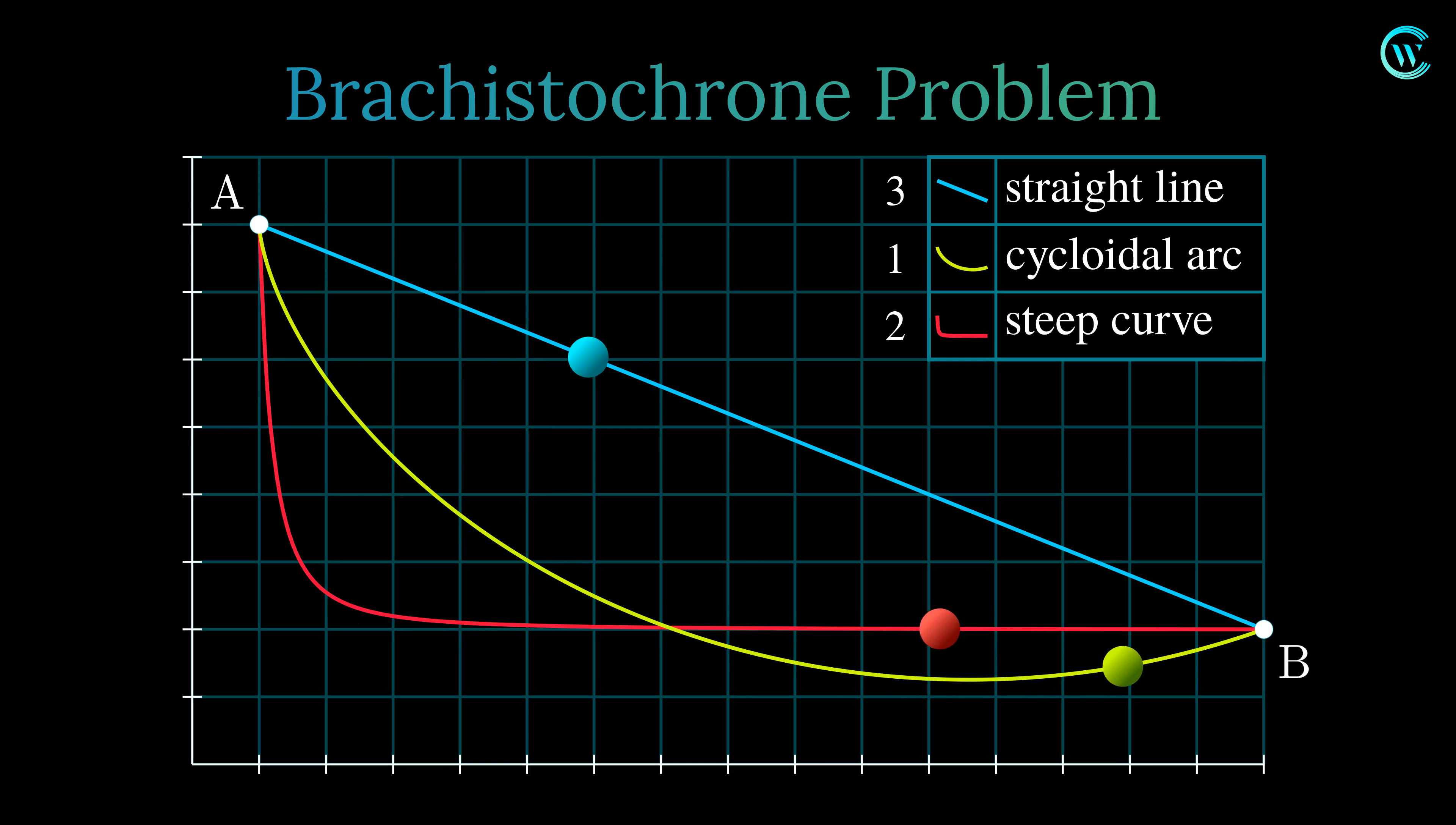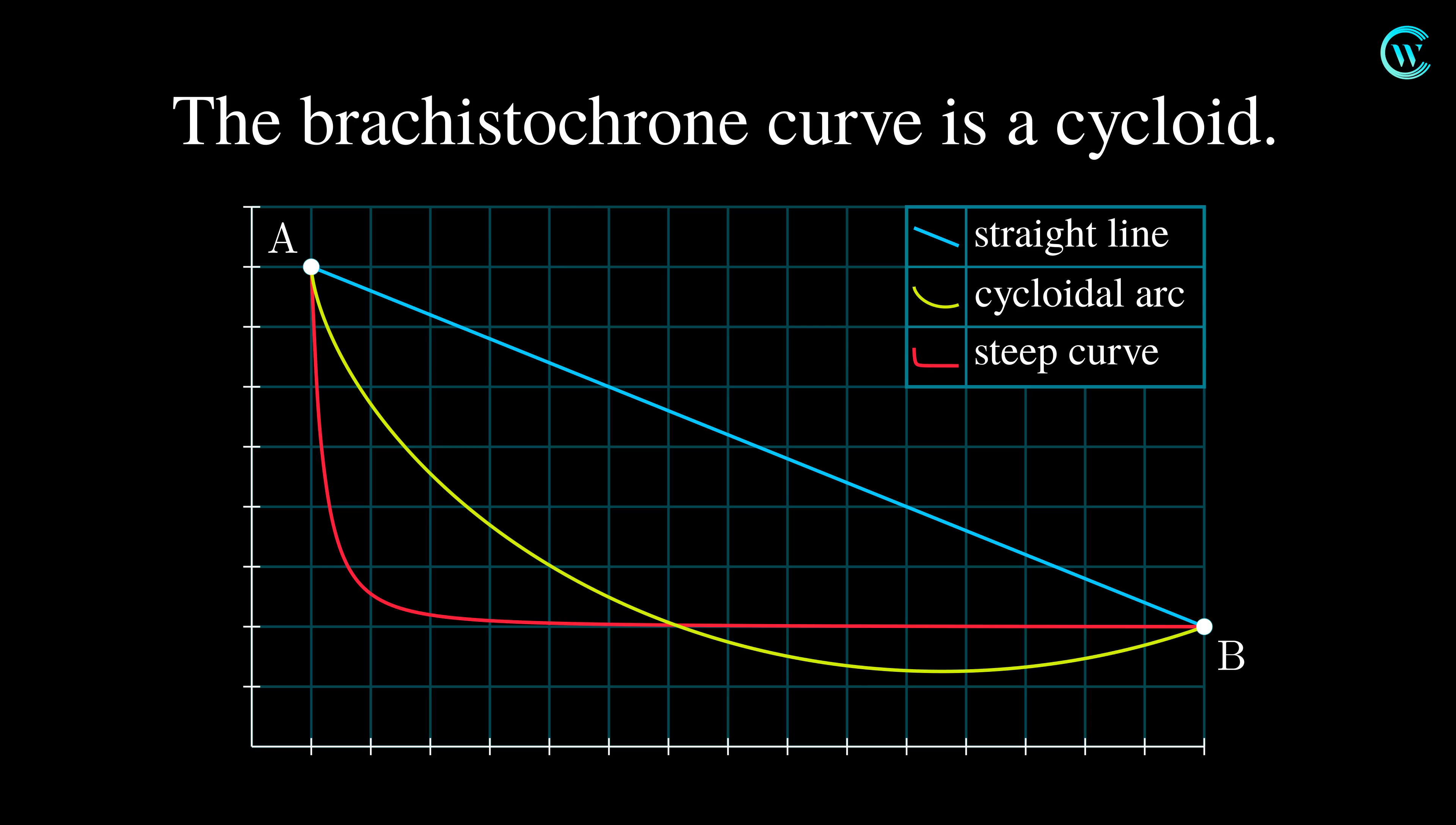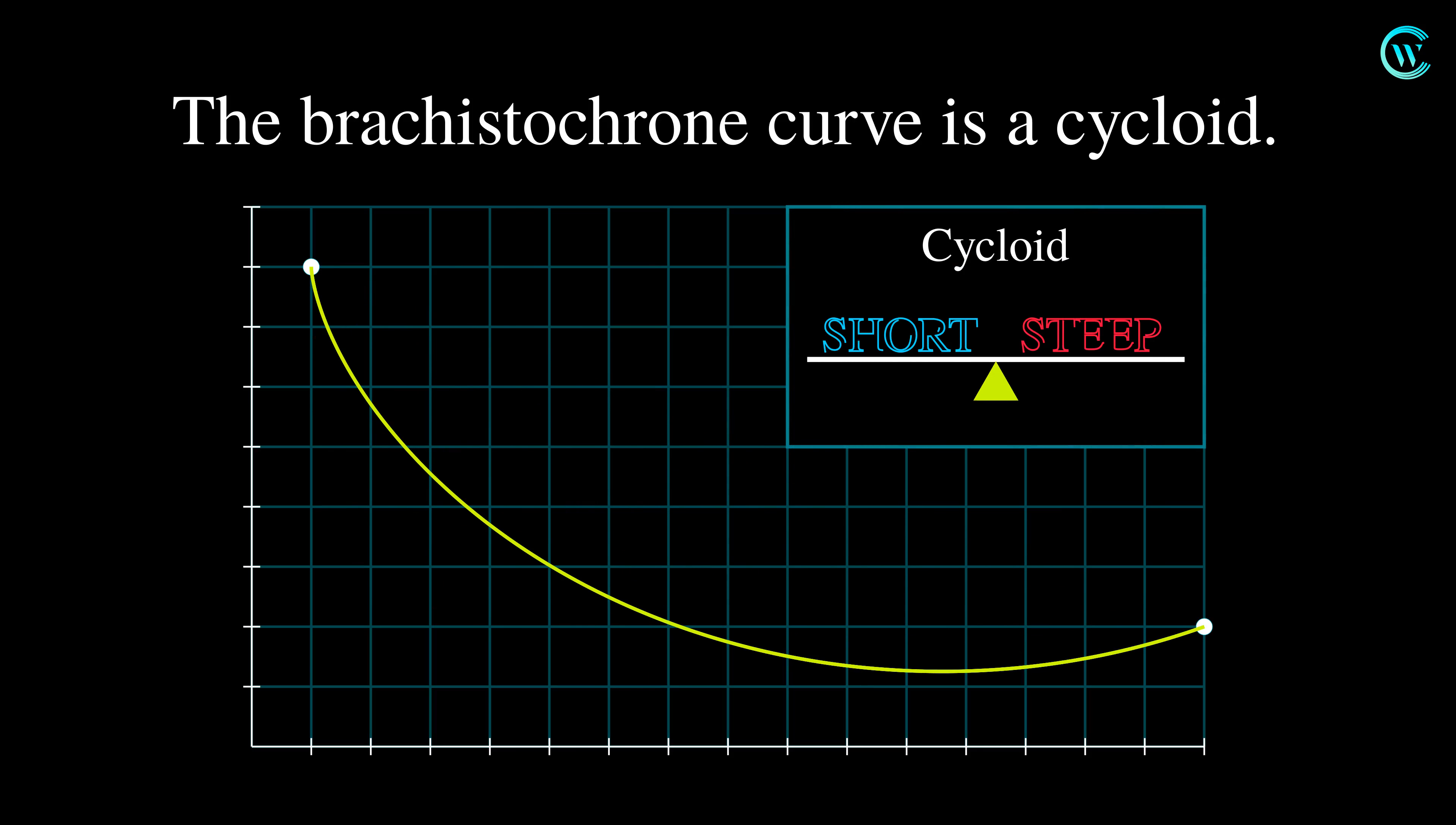In fact, a cycloid is the only way to achieve the minimum time of travel over all possible paths from A to B. Time minimization leads to the answer of the Brachistochrone problem, and a detailed explanation can be found in the calculus of variations. In short, a cycloid comes out to be the solution as it is the way of the most optimized path, offering the perfect balance between displacement and velocity.